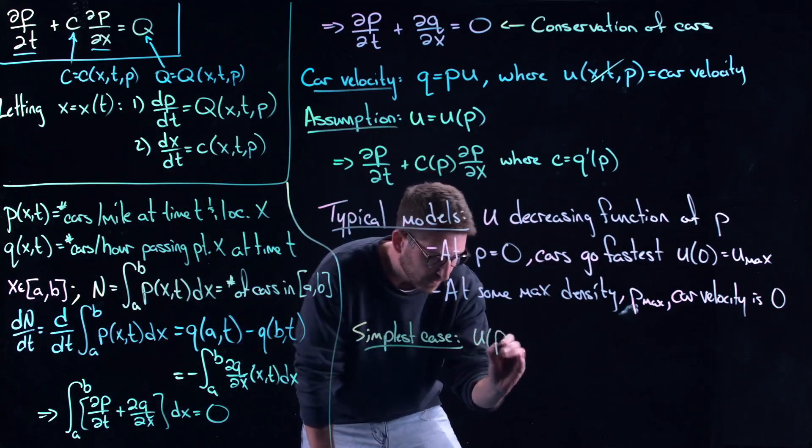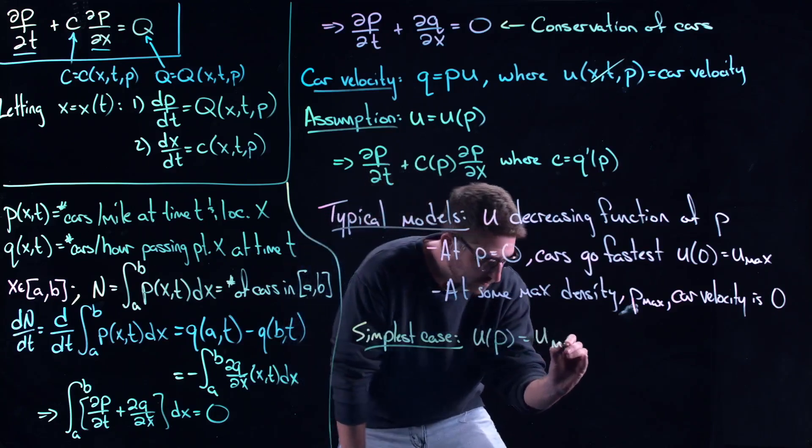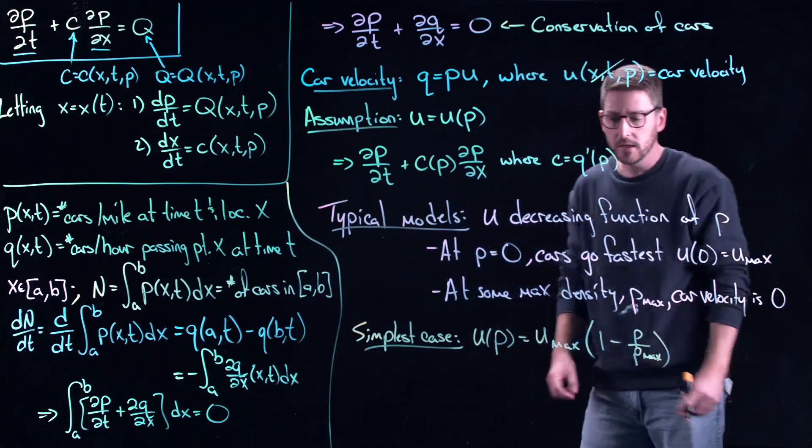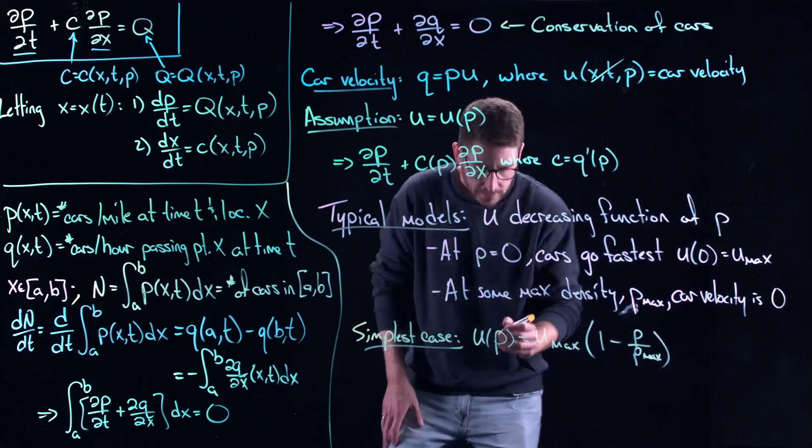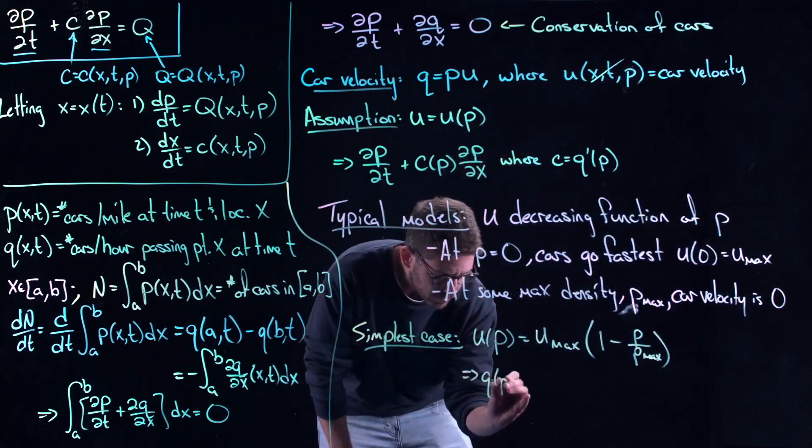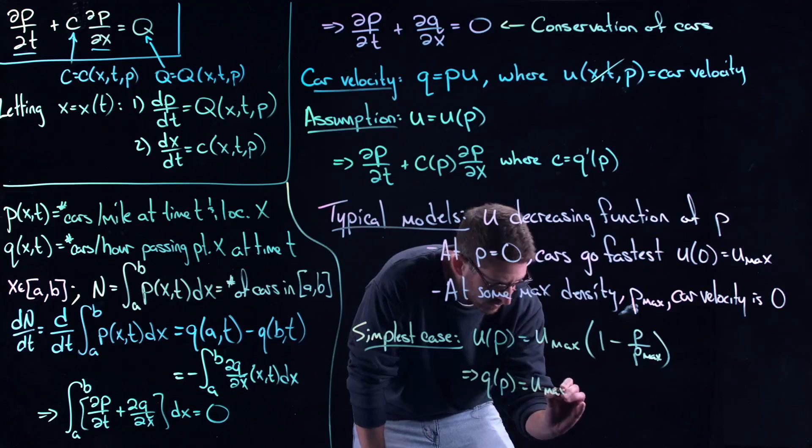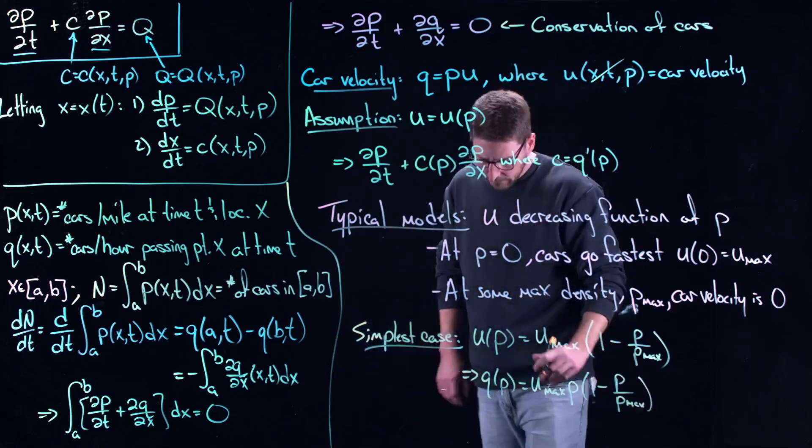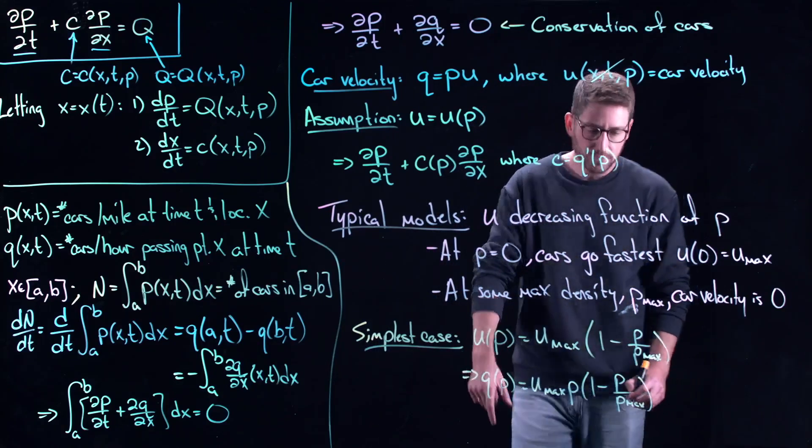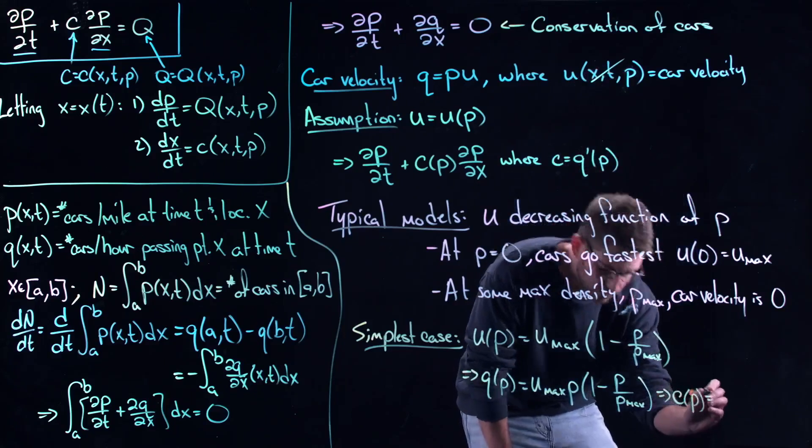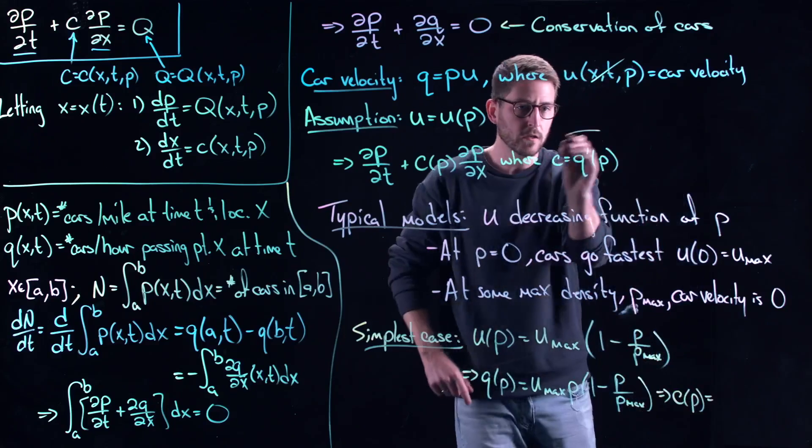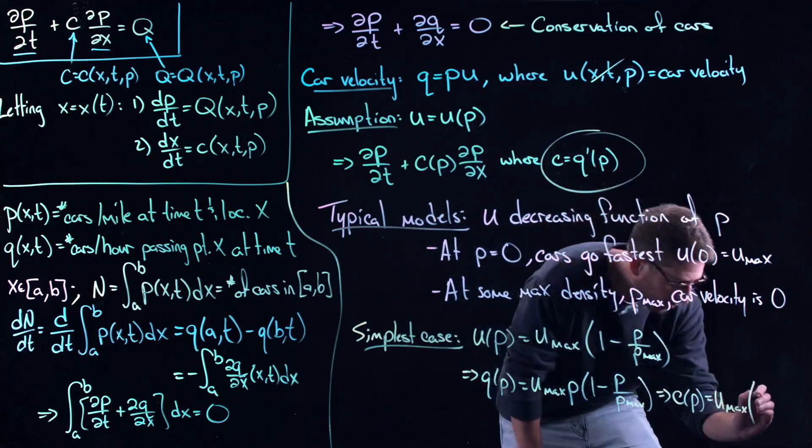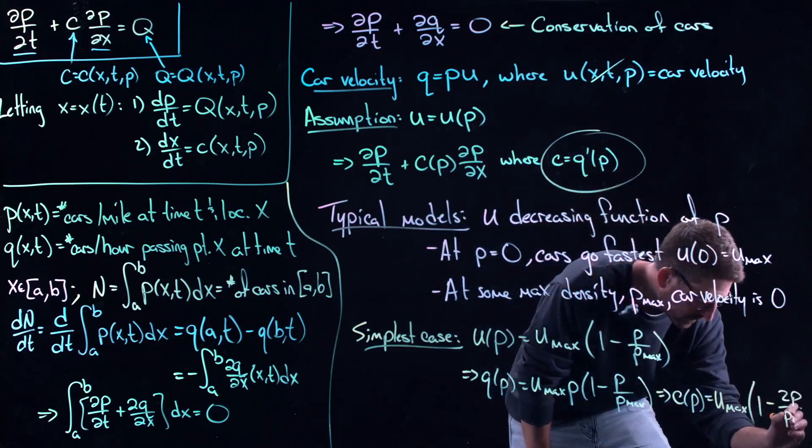You could have u of p is equal to, for example, u max times 1 minus p over p max. Really simple linear decreasing function of p. That would be the simplest possible thing you could do. If that was the case, then your q function would look like this. It would be u max, which is just a constant, times p times 1 minus p over p max, a sort of logistic function, a quadratic function. And then if you differentiate that, you'll get your c function, which is just q prime by definition. And so here, you get u max of 1 minus 2p over p max.